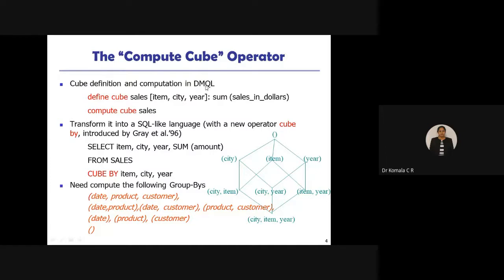The same example can be written using SQL and DMQL. In DMQL, to define a cube, use the keyword 'define cube' followed by the cube name. For this example, the cube is named 'sales' because we are talking about the sale of a product in a particular year and location. The dimension names used are item, city, and year — three dimensions total.